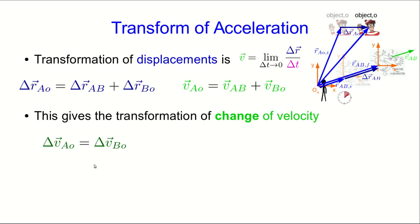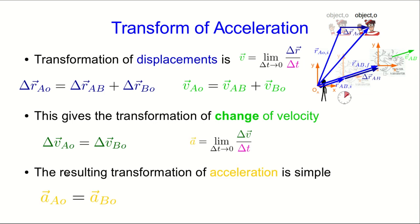This now, just by subtractions as we saw in the last video, gives the transformation of change of velocity. Where you may remember what happens is that because changes always involve a subtraction, the relative velocity of the two frames just cancels out. And so we have this very simple relationship which leads, through the acceleration definition, to a very simple transformation of acceleration. It just says that all observers in inertial frames agree when they measure the acceleration.